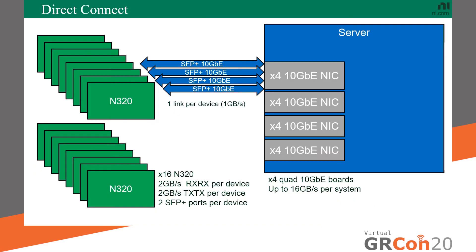A better solution is a direct connect topology, where each SDR device is connected directly to the server. With 16 devices, each 10-gigabit link connects directly to a quad-port network card with four SFP+ ports — each port appearing as its own network interface. This is far cheaper: those quad-port network cards cost around $400 each, compared to $10,000–$20,000 for a switch, representing enormous cost savings.